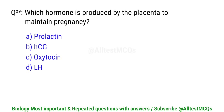Question number 29. Which hormone is produced by the placenta to maintain pregnancy? Correct option is B. hCG.